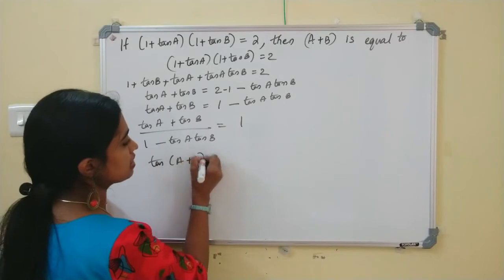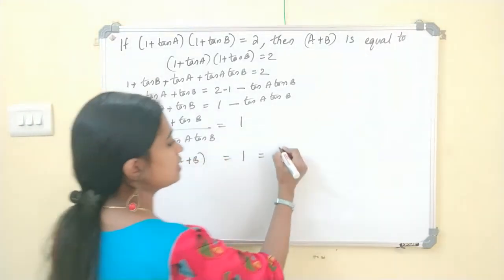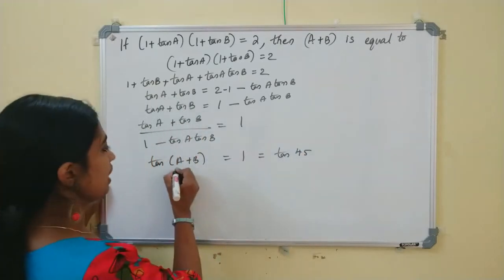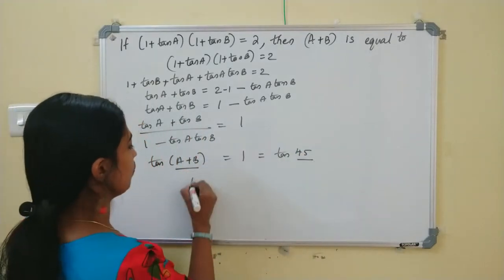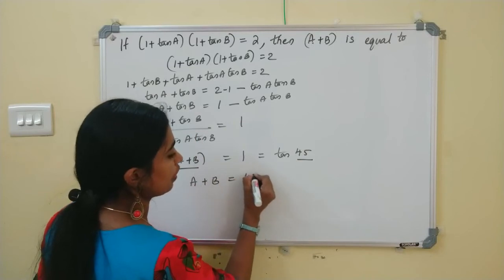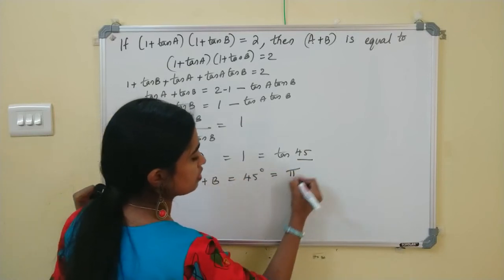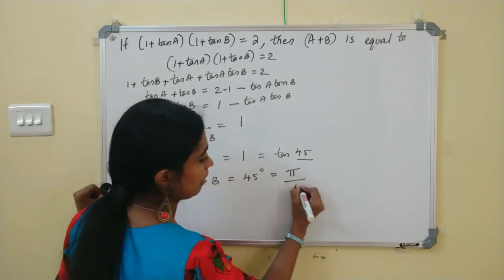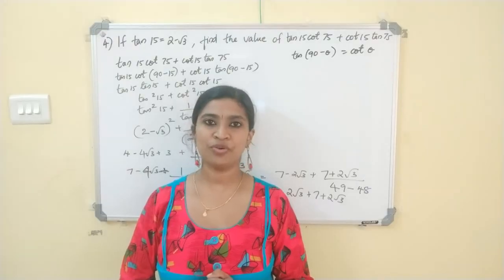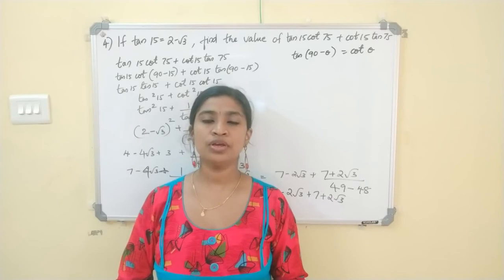So tan(A + B) = 1. Since tan 45° = 1, we have A + B = 45°. In terms of pi, 45° = π/4. So the answer is A + B = π/4. I hope you are able to follow my lectures. If you have any doubts, you can comment below. Thank you.